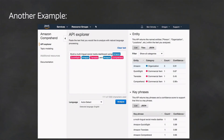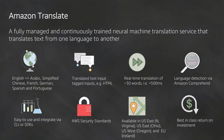Comprehend lets us detect sentiment, key phrases, languages, topic modeling, entities — all that good stuff. And Translate — Amazon Translate is powered by neural machine translation. One of the hardest things in neural machine translation is going from German compound words to English.